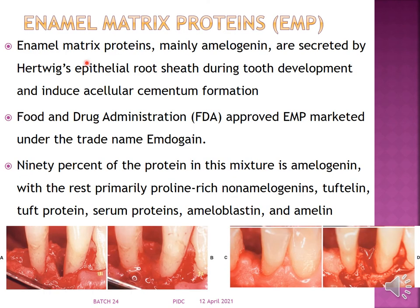Enamel matrix protein mainly consists of amelogenins secreted by Hertwig's epithelial root sheath during tooth development, which induces acellular cementum formation. FDA-approved under the name Emdogain, 90% of the protein mixture is amelogenins, with the rest being proline-rich non-amelogenins, tuftelins, tuft proteins, serum proteins, ameloblastin, and amelin.